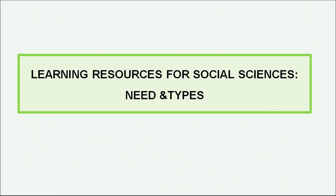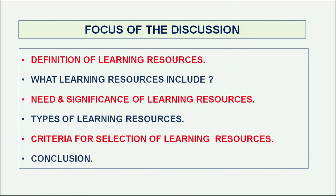The title of this topic is 'Learning Resources for Social Sciences: Need and Type.' Before going into the topic in detail, the main themes of this discussion are: definition of learning resources, what learning resources include, need and significance of learning resources, types of learning resources, criteria for selection of learning resources, and finally, conclusion.